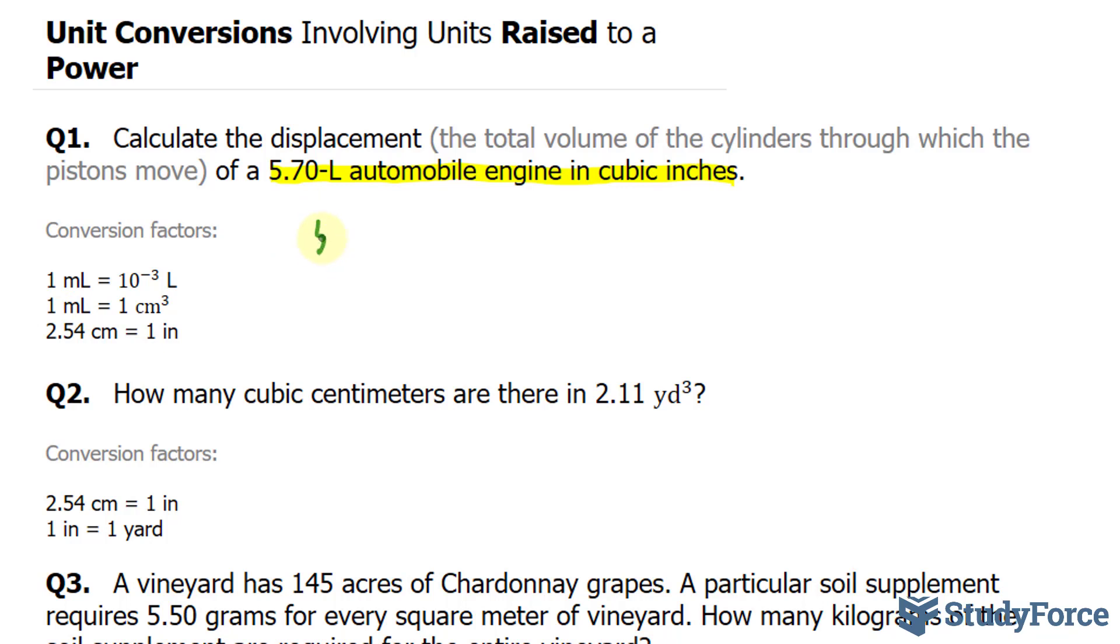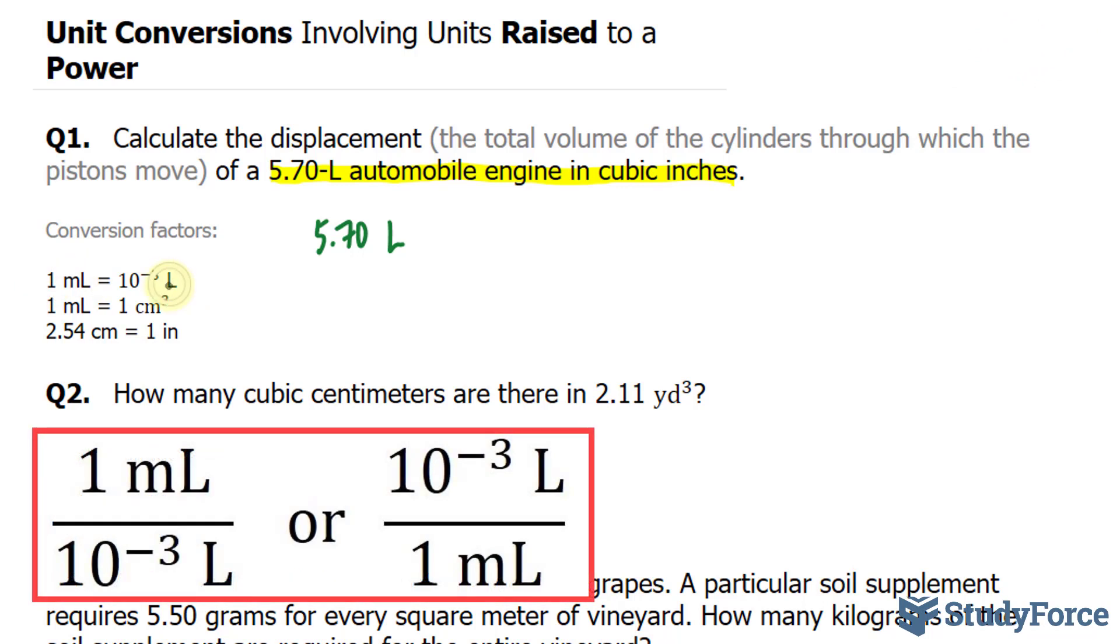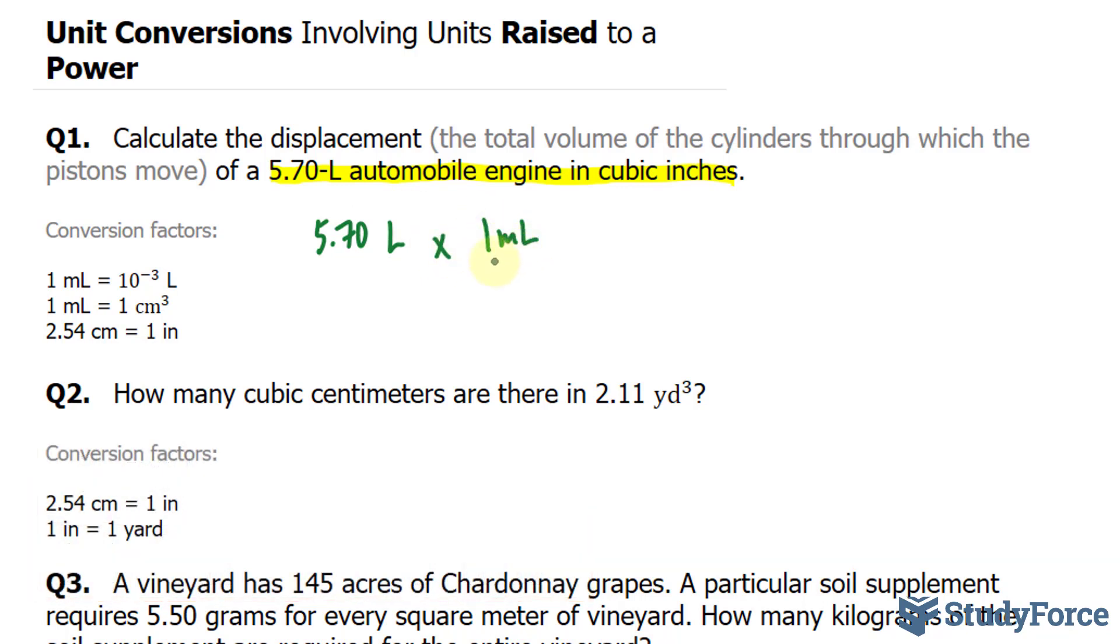So with 5.70 liters, I'll multiply this number by this conversion ratio. Each of these conversion ratios can be written as a fraction. I can write this as 1 milliliter over 10 to the power of negative 3 liters, or 10 to the power of negative 3 liters over 1 milliliter. The version you want to use is the one that will eliminate the unit you start with. If I multiply by 1 milliliter over 10 to the power of negative 3 liters, the liters will cancel out, leaving me with milliliters.